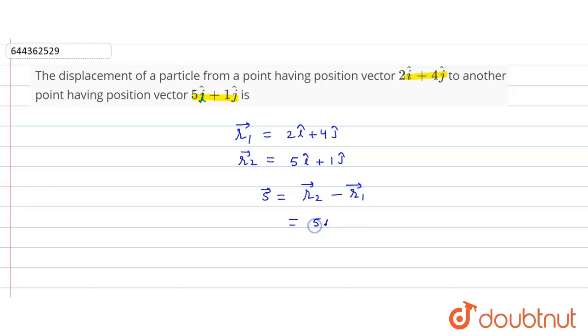So that is equal to 5i cap plus 1j cap minus 2i cap minus 4j cap. So the displacement vector will be 5i cap minus 2i cap, that is equal to 3i cap, plus 1j cap minus 4j cap, that is equal to minus 3j cap.